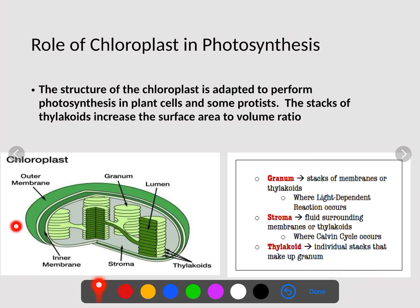Chloroplast looks almost like a little bean, but inside you can see all these different stacks. One entire stack — I like to call them pancakes — is what's known as a granum. One tiny pancake, one of these individual discs, is our thylakoid. Inside each thylakoid in that stack is where the light-dependent reaction of photosynthesis occurs. The gray liquid that surrounds them is the stroma — like the syrup that goes over grandma's pancakes — and this is where the Calvin cycle occurs, where glucose is being produced. The stacks of thylakoids increase surface area, creating more places for photosynthesis to occur.